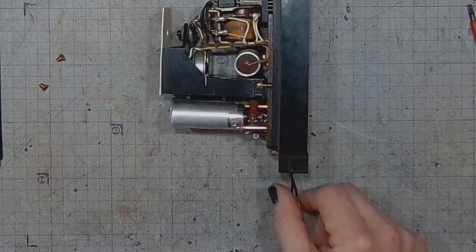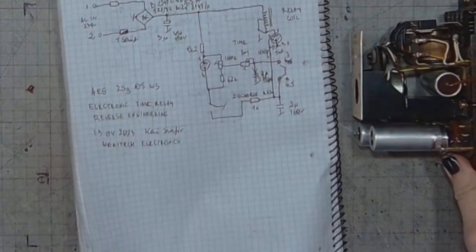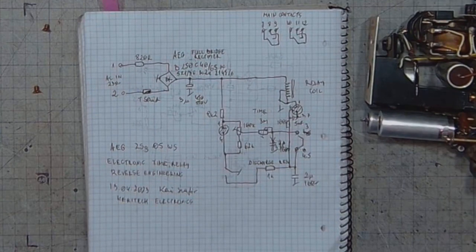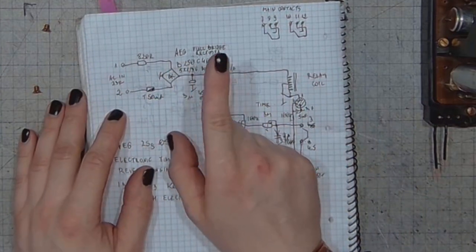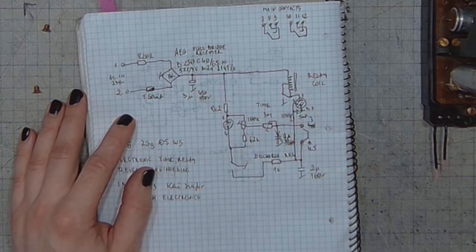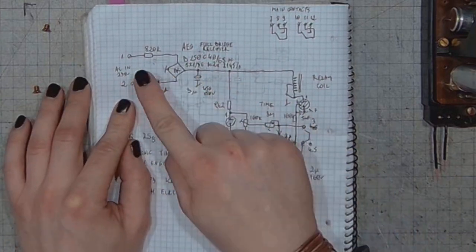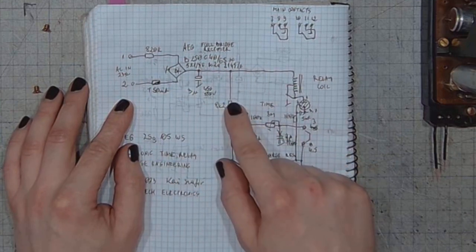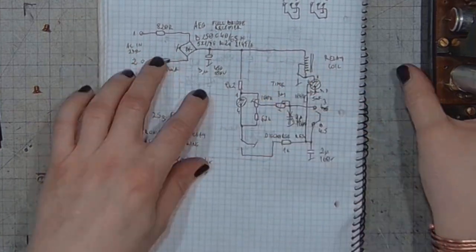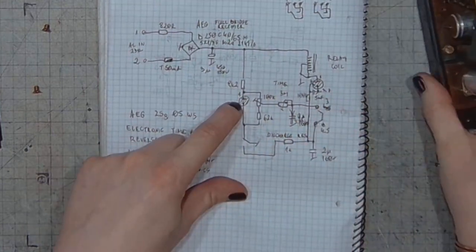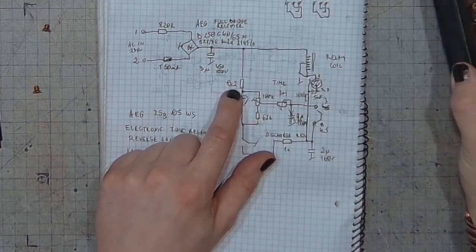Let's take a look at the schematic to see what exactly is happening after we switch the device on. So here's the full bridge rectifier that provides the DC voltage for the whole unit. This is the current limiting resistor.